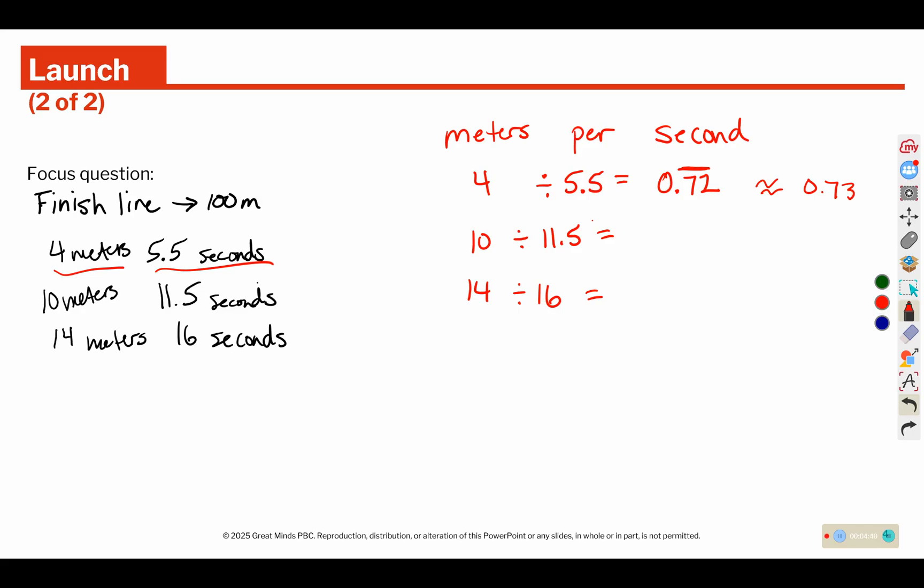Let's check the next one. If we take 10 and divide by 11.5, we end up with 0.869 and it continues on. It doesn't repeat though, but we can approximate this as 0.87. And the last one, 14 divided by 16 is 0.875, so we can approximate that as 0.88. The 5 makes the 7 go up, the 9 makes the 6 go up.